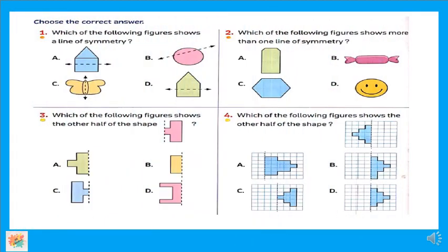طيب، choose the correct answer. مديني بقى questions. Which of the following figure shows a line of symmetry? يالا A ولا B ولا C ولا D — بسرعة معاكو 20 seconds! فكر بسرعة. مين فيهم عنده line of symmetry؟ برافو عليكو، excellent! Letter C — شطرين، برافو!